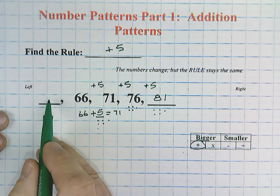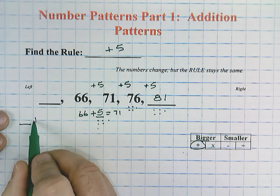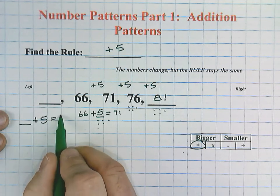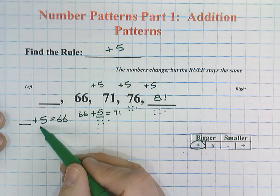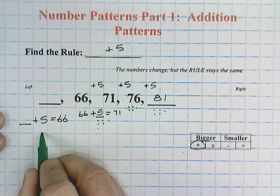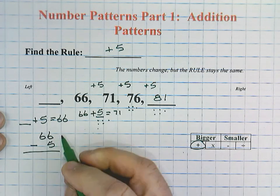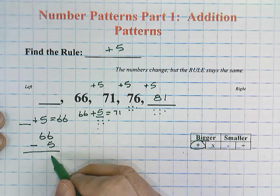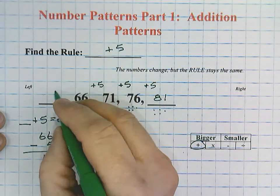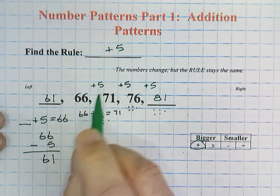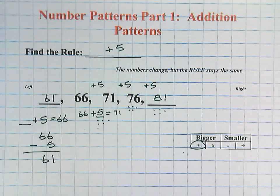But we still have this number to the left. So this would read blank plus 5 equals 66. We're going to need to subtract using the related fact. 66 minus 5: 6 take away 5 is 1, and bring our 6 down. 6 take away nothing is 6. The last number of our pattern would be 61. All right, thanks everybody.